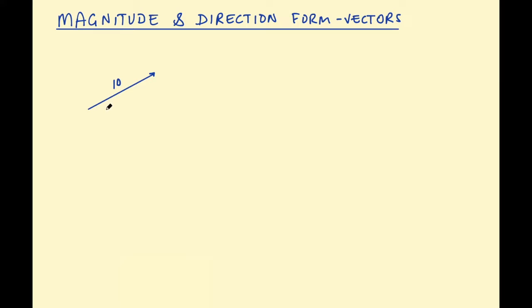So you could have an angle measured from the horizontal — let's say this is a horizontal line — or it could be measured from a vertical line as well. If that angle was 20 degrees, you now have a vector in magnitude direction form. The key point is you need to be able to convert between magnitude direction form and column vector form.